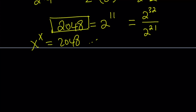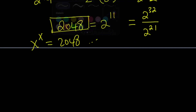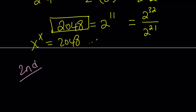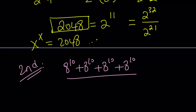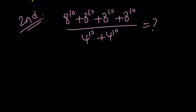So this is the first method. Let's go ahead and take a look at the second method for the problem. I'm going to rewrite the expression one more time: 8 to the 10 plus 8 to the 10 plus 8 to the 10 plus 8 to the 10, divided by 4 to the 10 plus 4 to the 10. I'm going to write the numerator as 4 times 8 to the 10th power and the denominator as 2 times 4 to the 10th power.